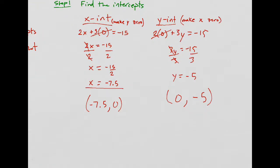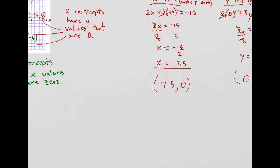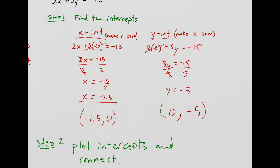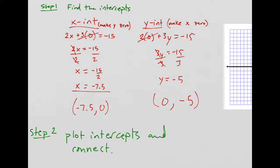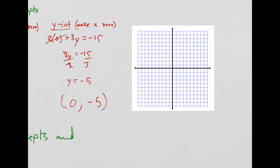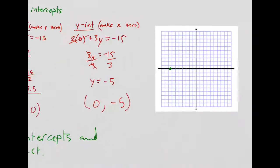Step 2 is to just plot these and connect them. That's because we're trying to sketch the graph. Plot and connect. So, I'm going to go plot these things. So, the first ordered pair, my X intercept was at negative 7.5, comma 0. So, I'll do that negative 1, 2, 3, 4, 5, 6, 7. Oh, wait. It's 7.5. So, what does that mean? That means 1, 2, 3, 4, 5, 6, 7, and then halfway.